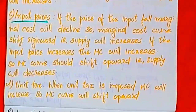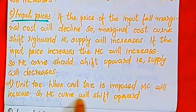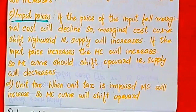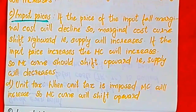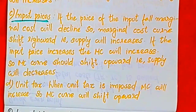The next factor is unit tax. When a unit tax is imposed, MC will increase and the MC curve will shift upward. Unit tax causes MC to increase.